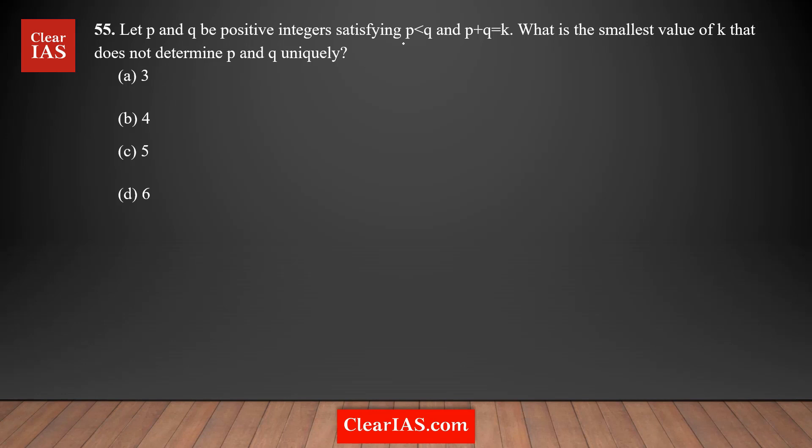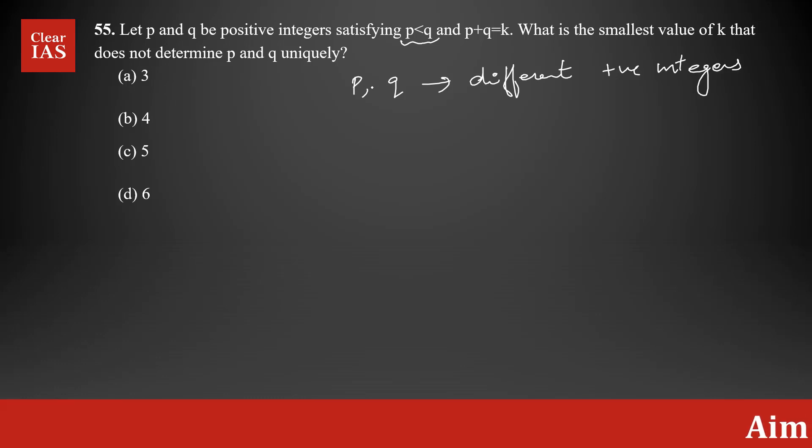It's given that P < Q, so P and Q are different positive integers. They cannot be the same. K is the sum of P + Q. What is the smallest value of K such that you cannot determine P and Q uniquely? That's what we need to find.